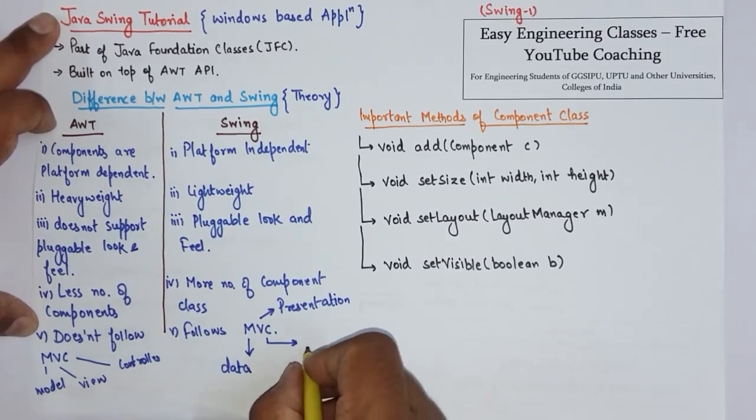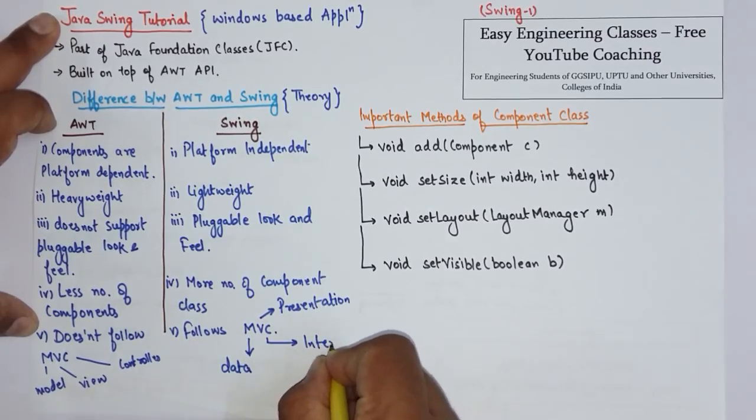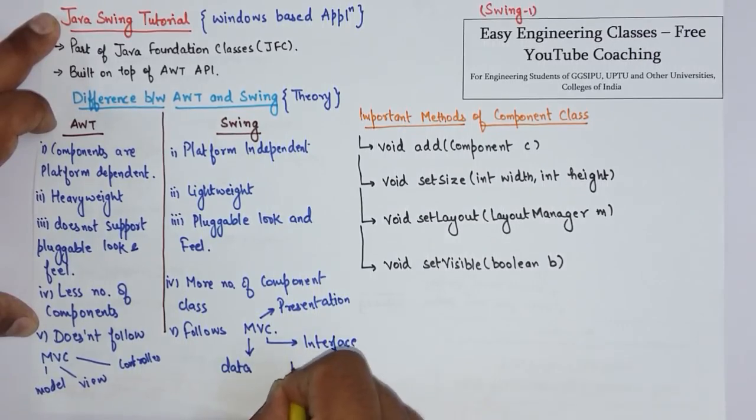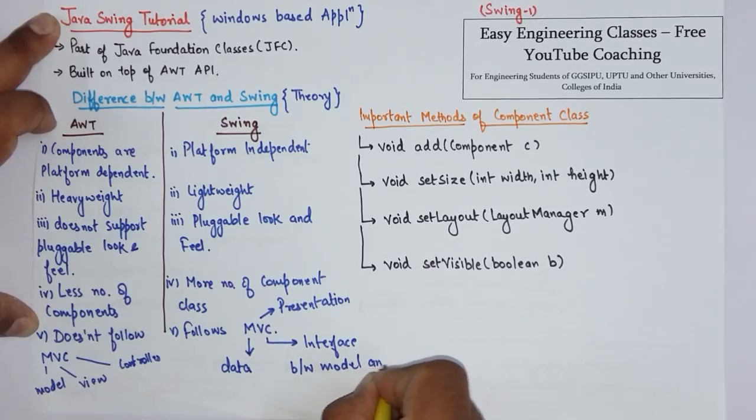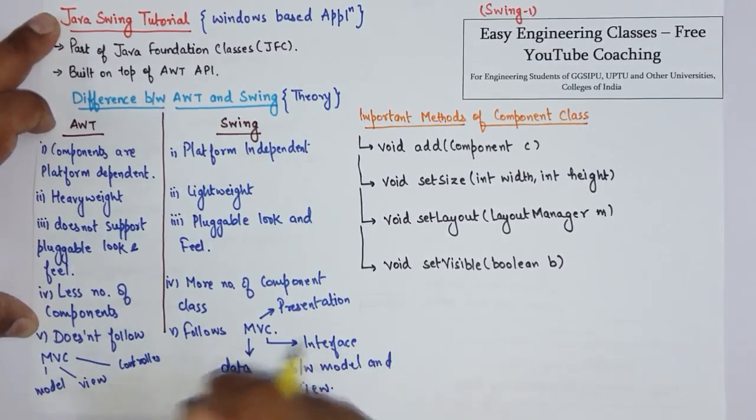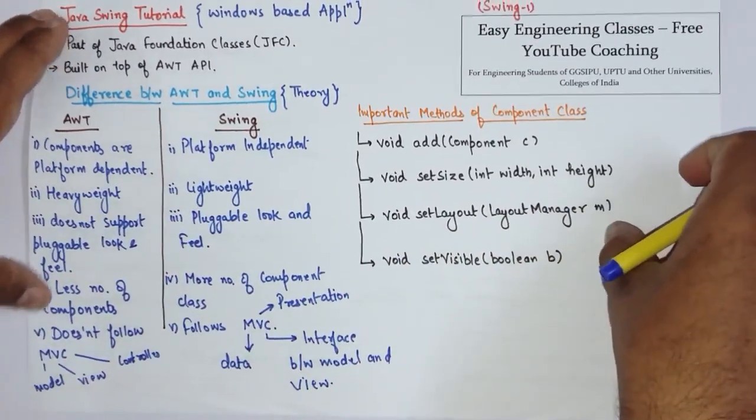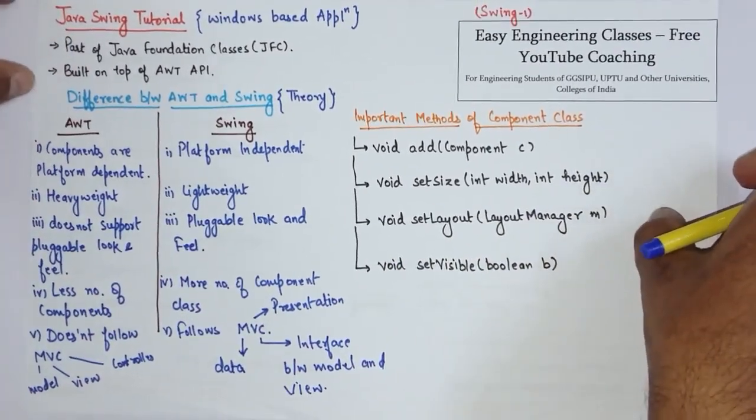MVC acts as an interface between model and view. Whereas Swing follows MVC architecture. These are some of the differences between Swing and AWT.